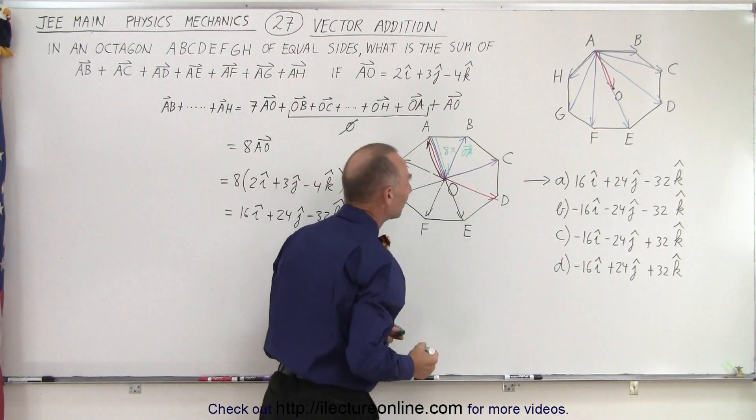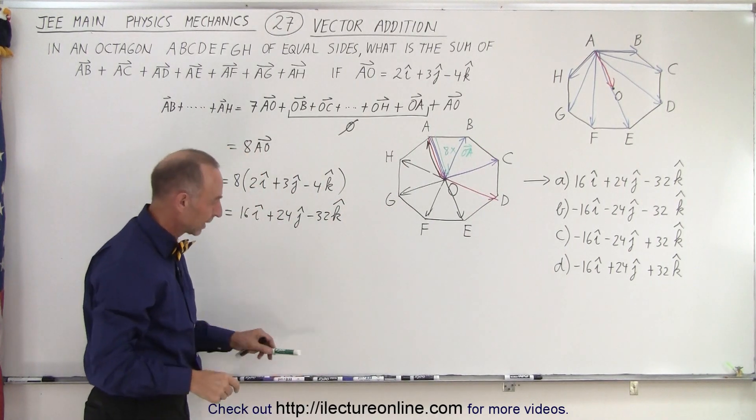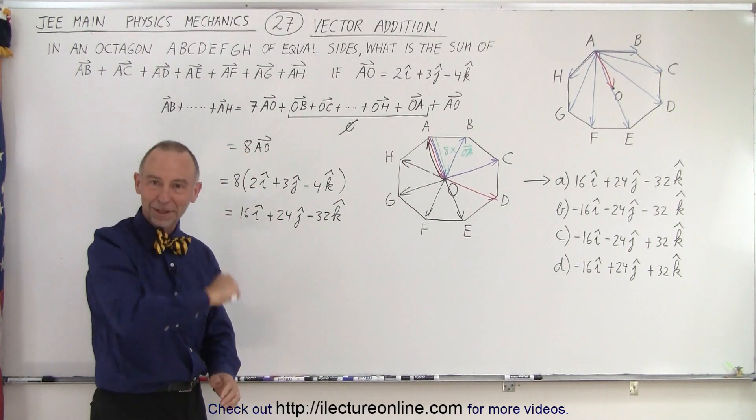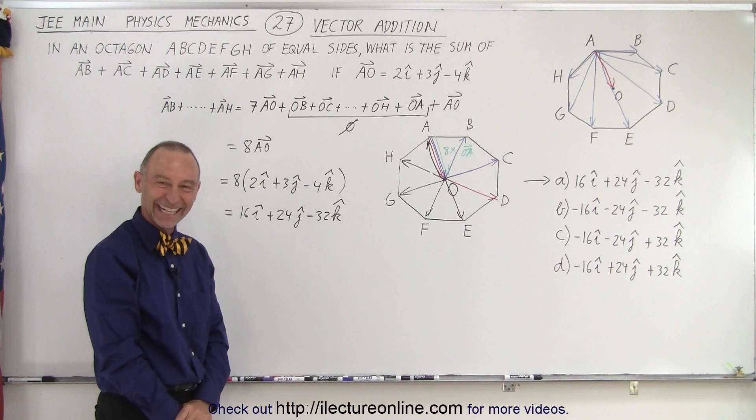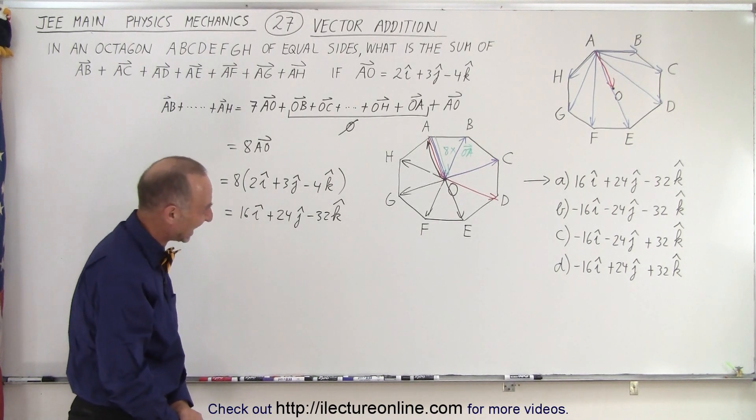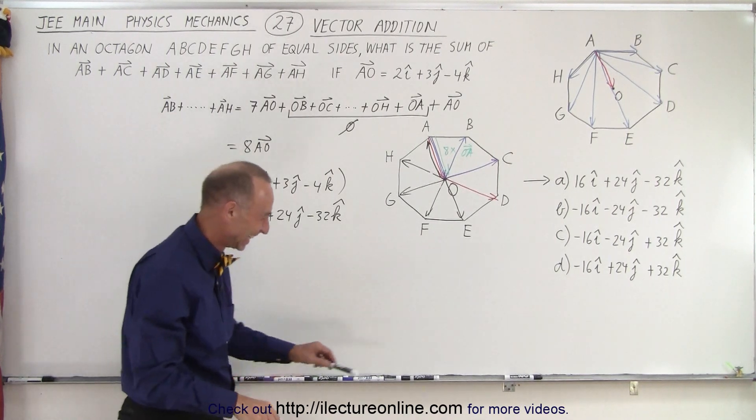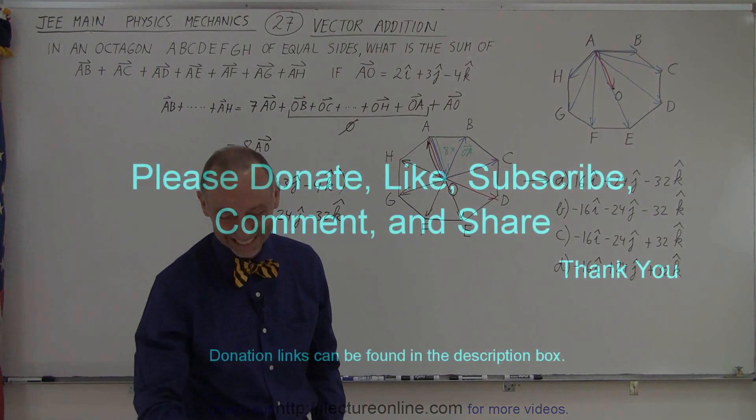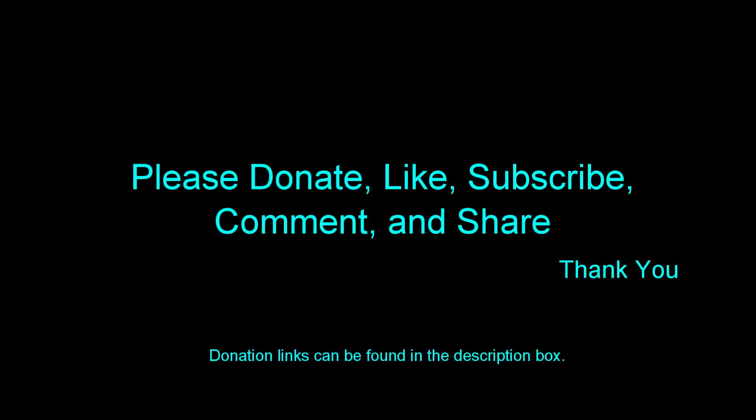So now you have eight times the vector OA. OA, yep. It would be much faster that way. It's a quick way. That's the quick way to do it. I like it. All right. All right. It's a quick way to do it.